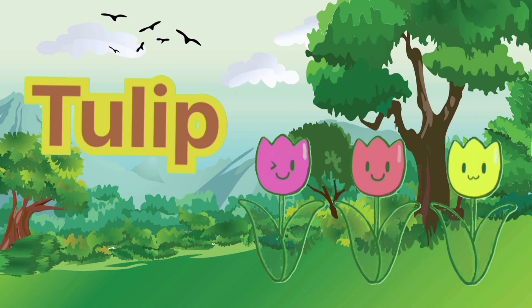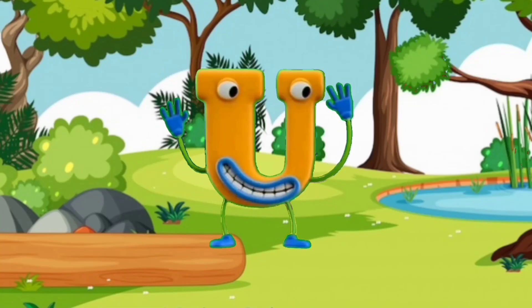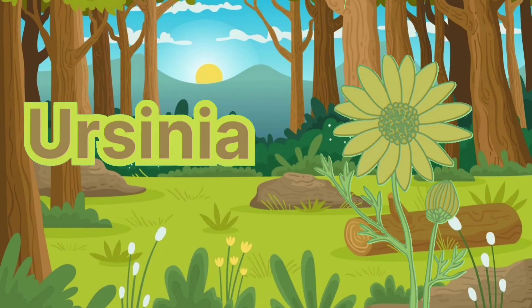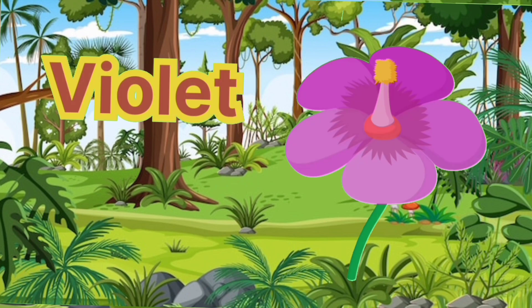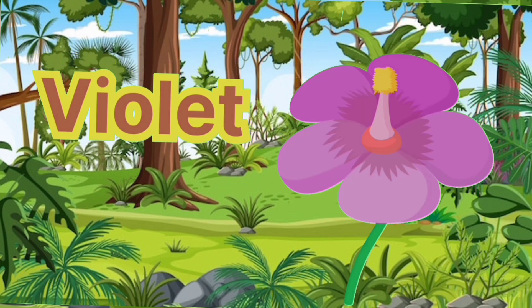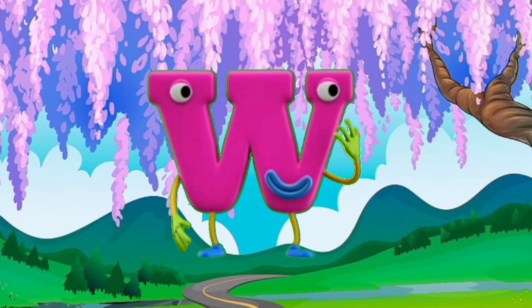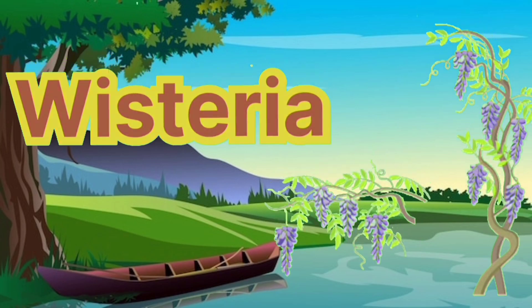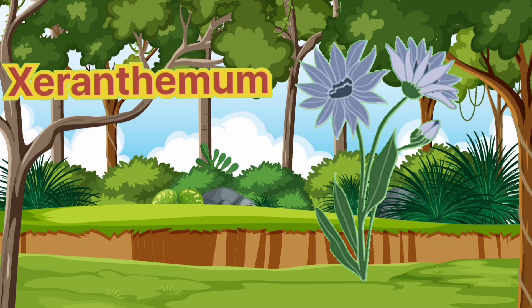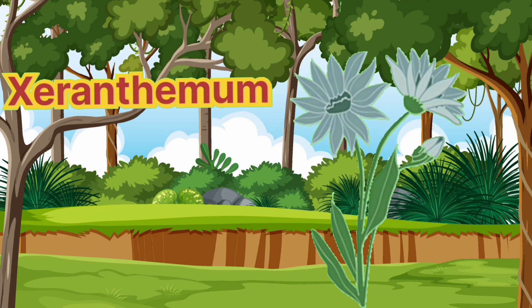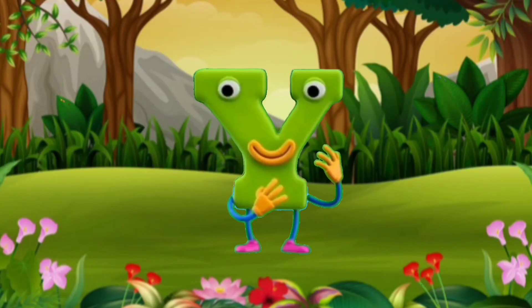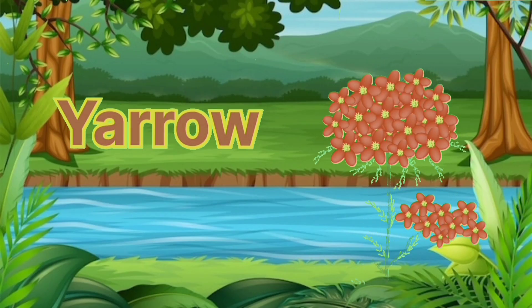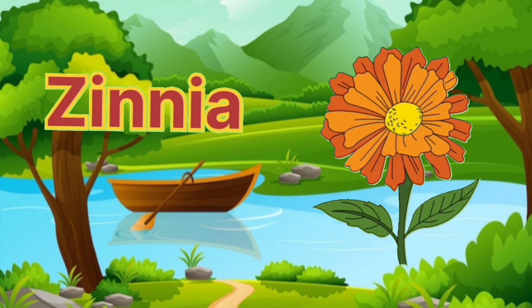U for Asinia, V for Violet, W for Wisteria, X for Zoranthemum, Y for Yarrow, Z for Zinnia.